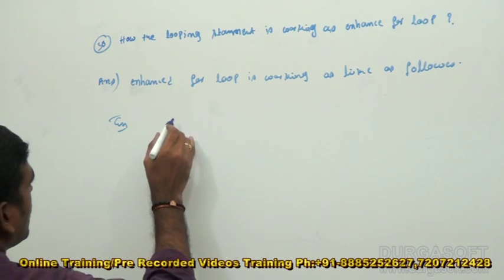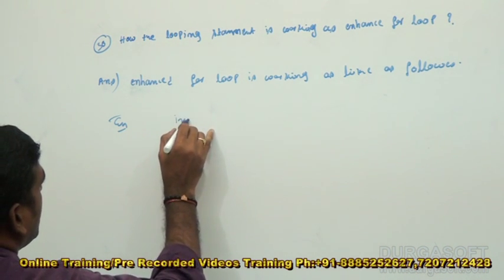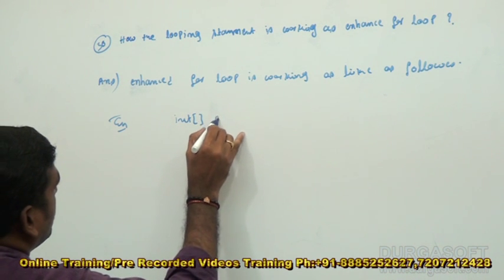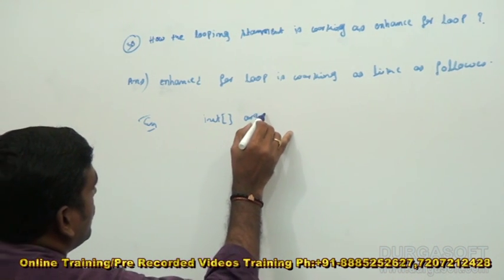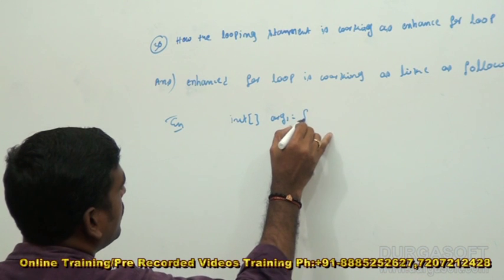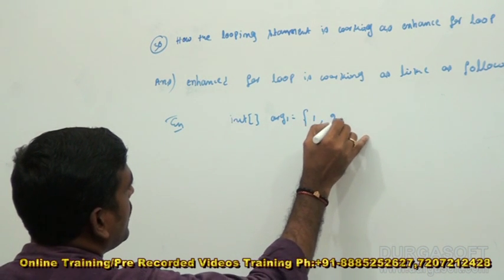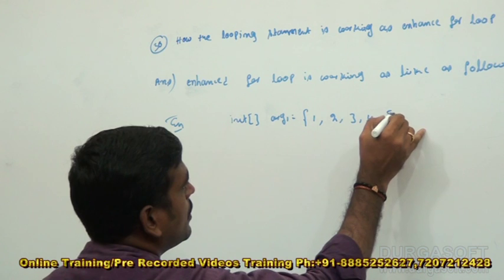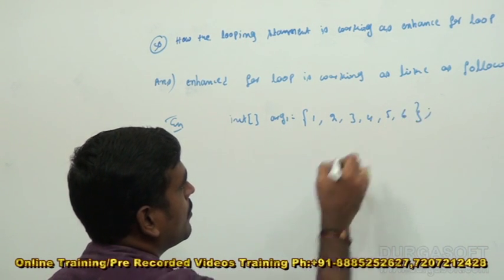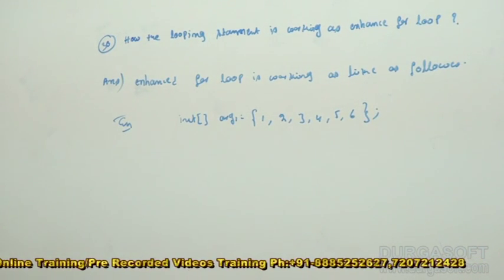I am taking one array here. int arg1 = {1, 2, 3, 4, 5, 6}. Okay, now,